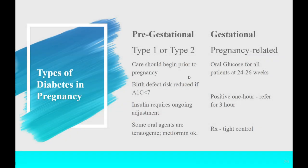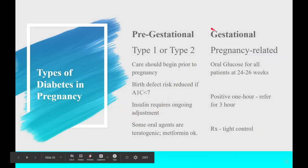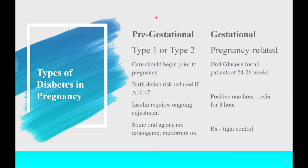We'll start with the types of diabetes in pregnancy. There are two basic types. Pre-gestational is diabetes that occurs prior to pregnancy, or diabetes diagnosed in the first 20 weeks. If it's after 24 weeks, we know it's probably caused by the placenta. If the mom has diabetes diagnosed prior to 20 weeks, we call it pre-gestational because we know she had some defect of carbohydrate metabolism before the placenta started aggravating things.